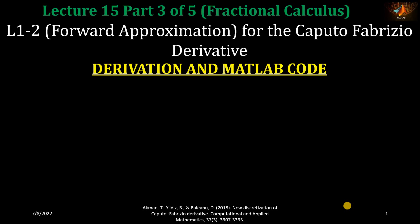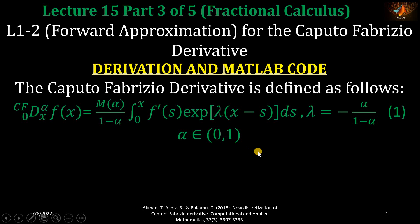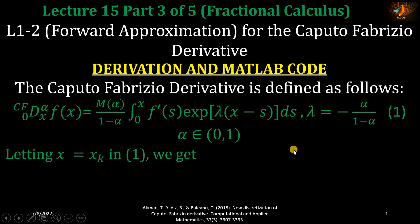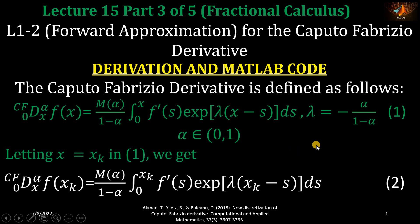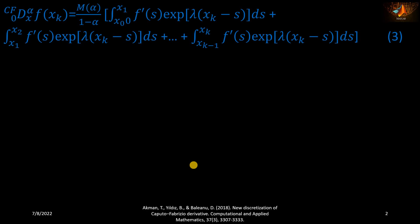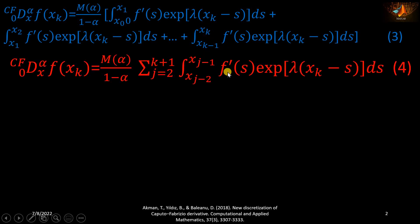Let's start our discussion of this third part. In equation number one, you have the definition for the Caputo-Fabrizio derivative. Let's replace x by x_k in this equation, giving us equation number two, which has the integration interval from zero to x_k. I am going to break this integration interval into several sub-intervals. We have the first integral from x_0 to x_1 and then continue until the last one.